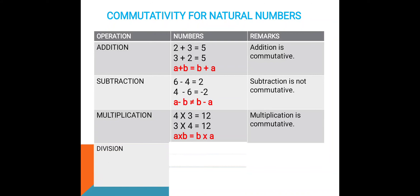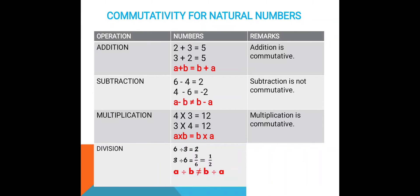Let us now check for division and divide any two natural numbers. 6 divided by 3 equals 2. Let us now change the order. 3 divided by 6 can be written as 3 upon 6. Reducing it further, we have the answer as 1 upon 2. So when the order of the numbers was changed for division, the answer also changed. Therefore, a divided by b is not equal to b divided by a. Hence, we can conclude division is not commutative for natural numbers.